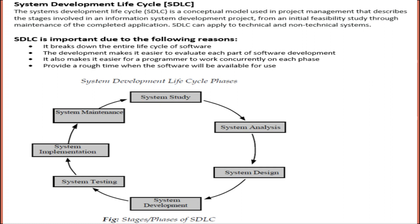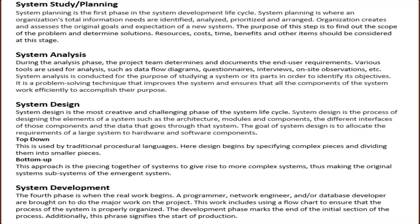The system development life cycle has the following phases: system study, system analysis, system design, system development, system testing, system implementation, and system maintenance. System study, also called planning, is the first phase in the SDLC, where an organization's total information needs are identified, analyzed, prioritized, and arranged. The organization creates and assesses the original goals and expectations of a new system.